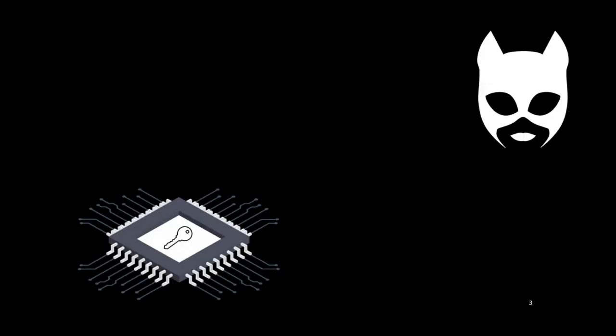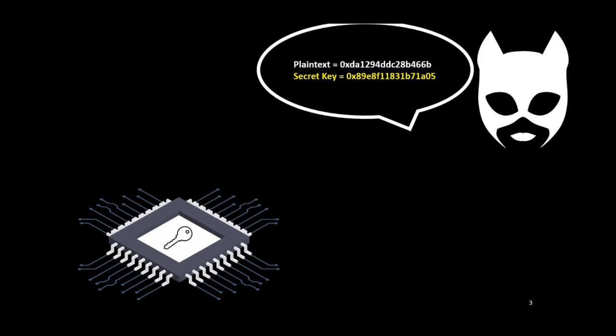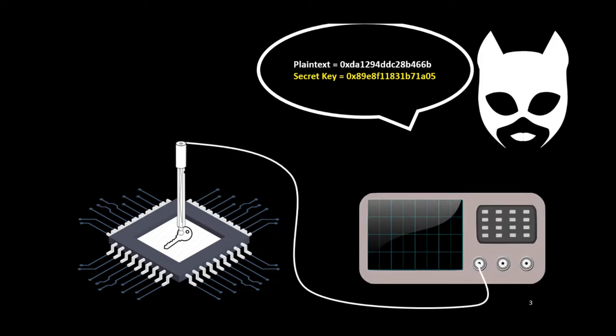Let's assume that an adversary has access to a physical device in which a cryptographic algorithm like AES is implemented, such that she can configure the secret key and the plaintext to perform an encryption. The goal of the adversary is to recover the sensitive information manipulated during this encryption. To perform a side-channel attack, at least one probe and one oscilloscope are needed, such that during the encryption the adversary can capture a physical trace that directly depends on the sensitive information.